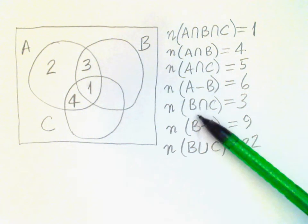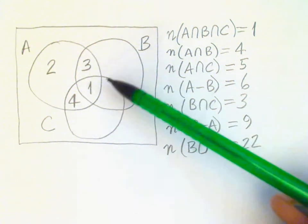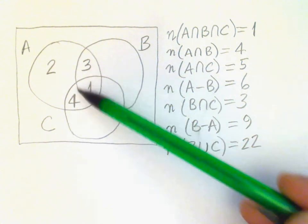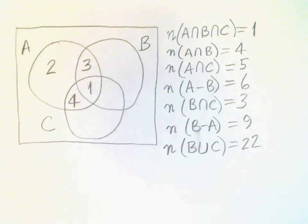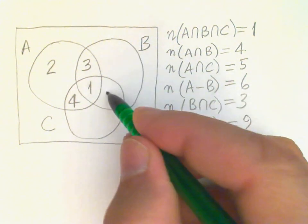Okay, the next bit of information says B intersect C is 3. Where is B intersect C? Well, it's here. That's where B and C overlap. Okay, and if the intersection has 3, this region has 1, that means there must be 2 elements in here.